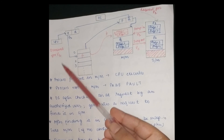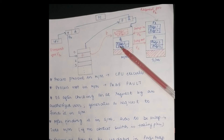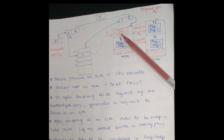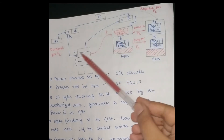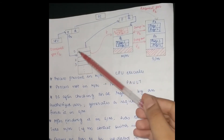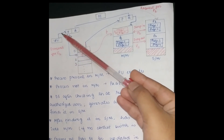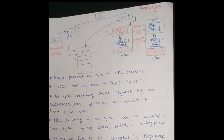Now P1, which the CPU demanded, is in secondary memory because it was not present in main memory. P1 gets swapped in. The next step is that when P1 is swapped in, we have to update the page map table with the frame number so that the CPU can be told that its demanded process is now present in main memory.